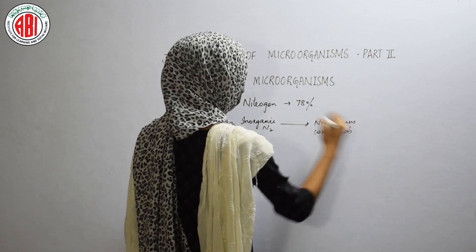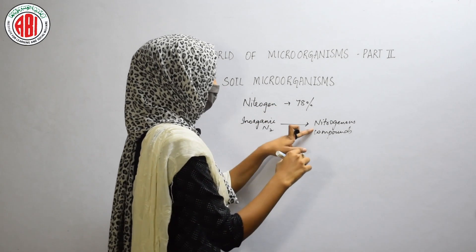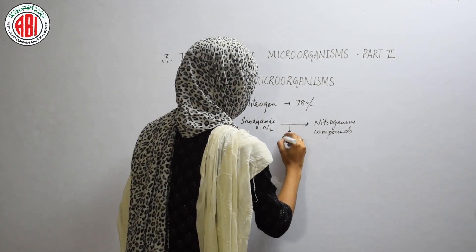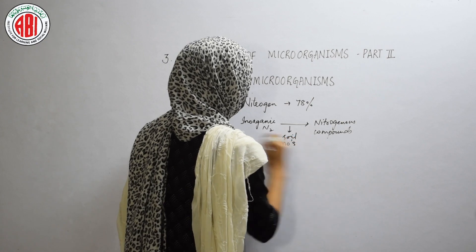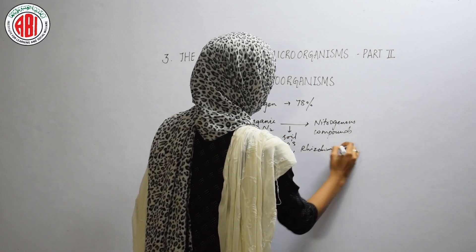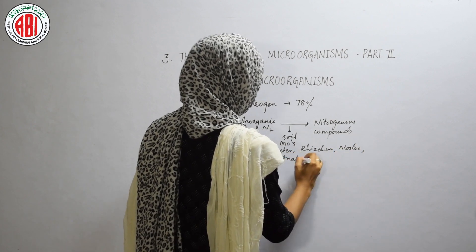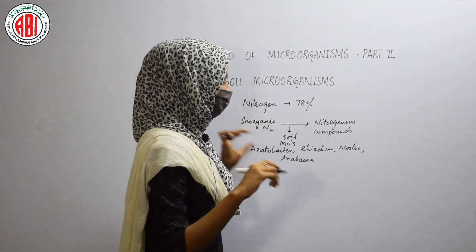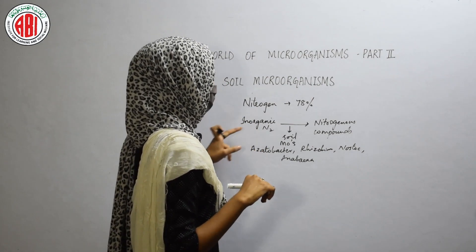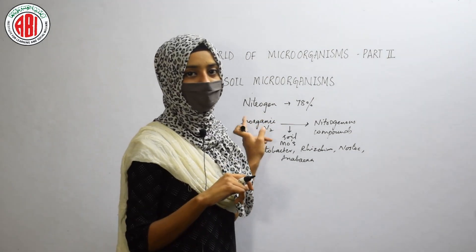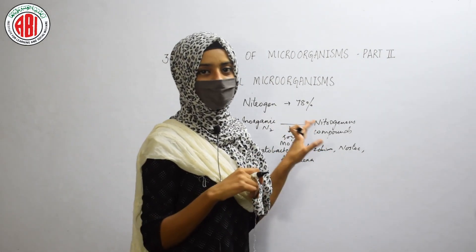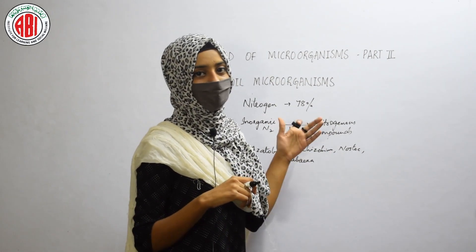This conversion of inorganic nitrogen to usable forms — like nitrogenous compounds, nitrate ions, or nitrite ions — takes place because of the presence of soil microorganisms. Examples include Azotobacter, Rhizobium, Nostoc, Anabaena, and many more. These microorganisms help in the conversion of inorganic nitrogen into nitrogenous compounds, and these nitrogenous compounds are the minerals available in the soil for plants to absorb.